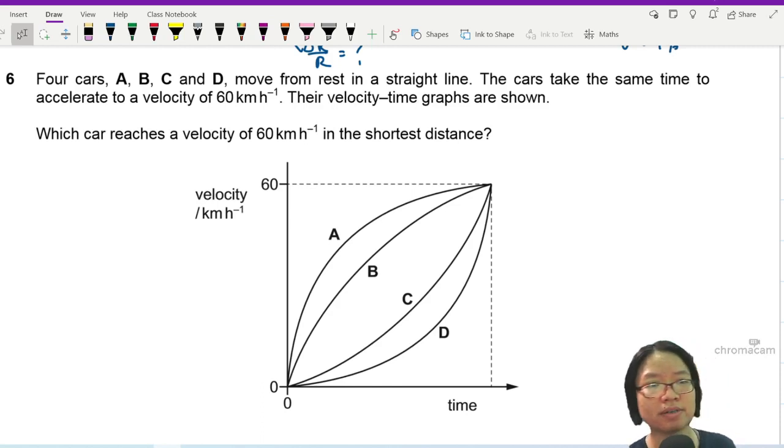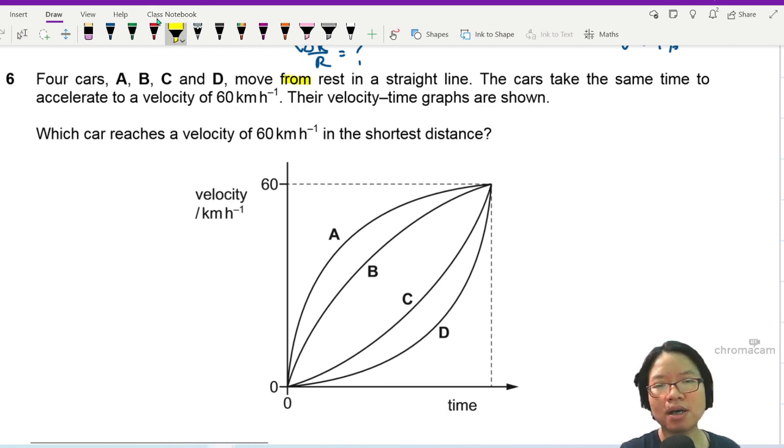Okay, question six. Four cars A, B, C, D move from rest in a straight line.